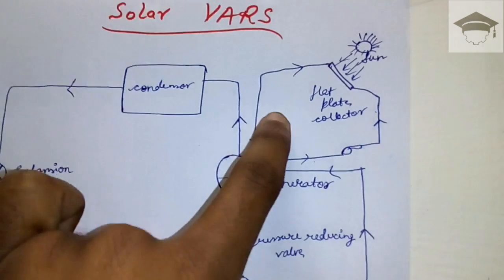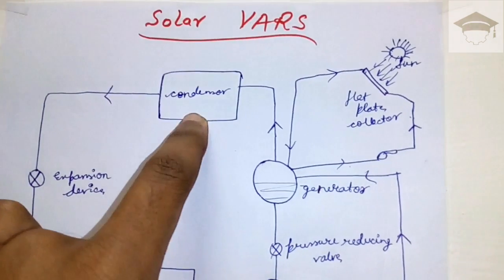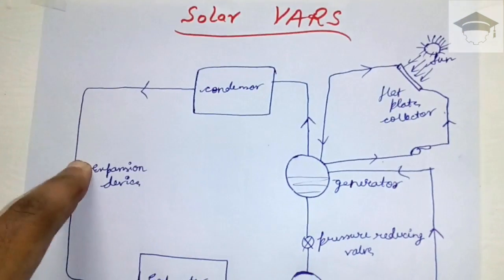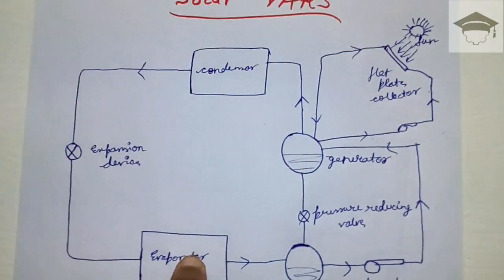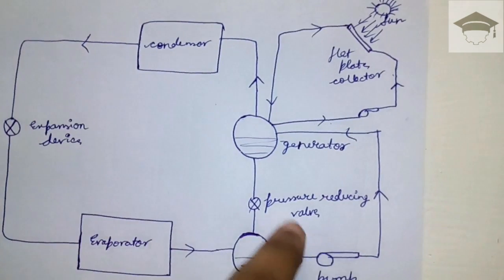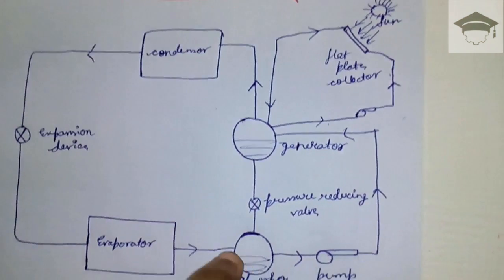In the expansion device, throttling occurs and then the circuit repeats. In the pressure reducing valve, the weak solution is again sent to the absorber to repeat the cycle.